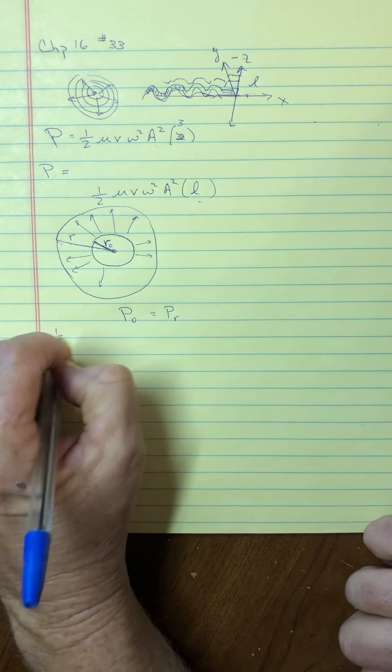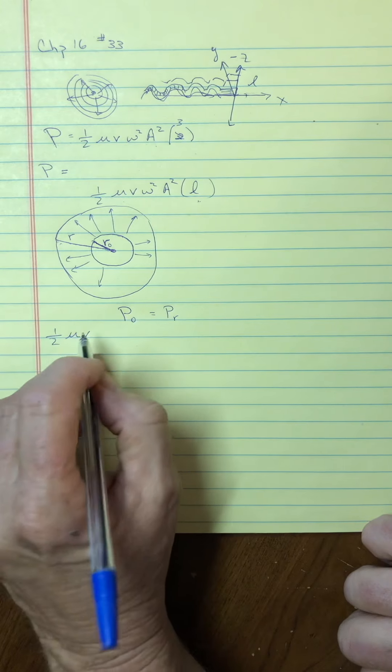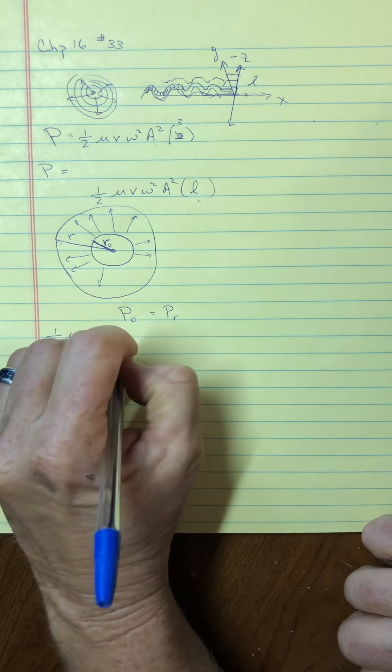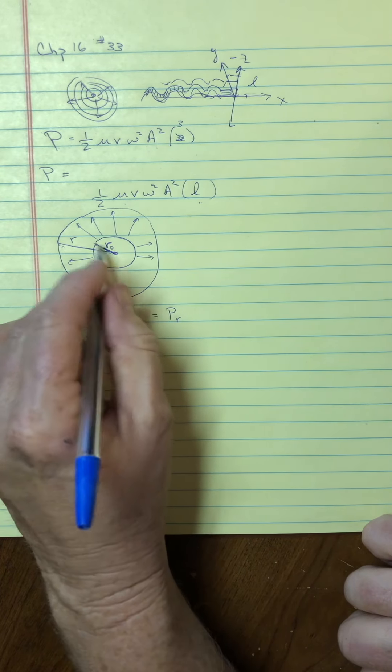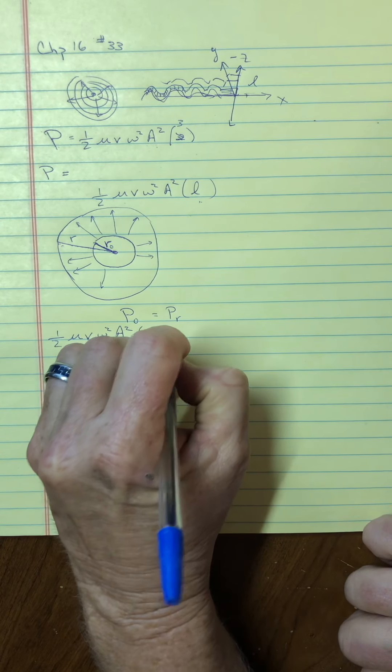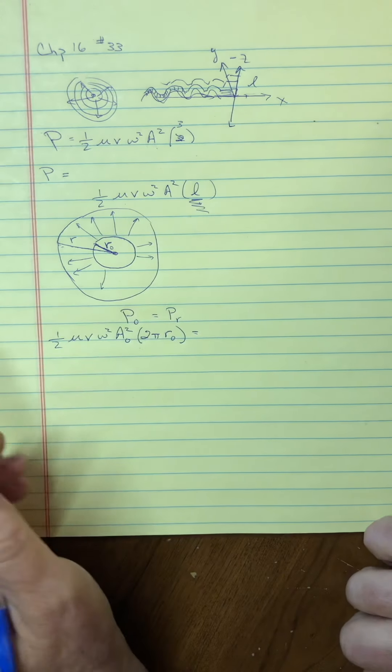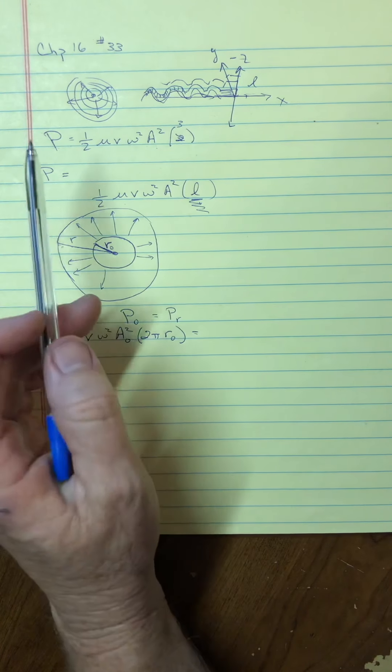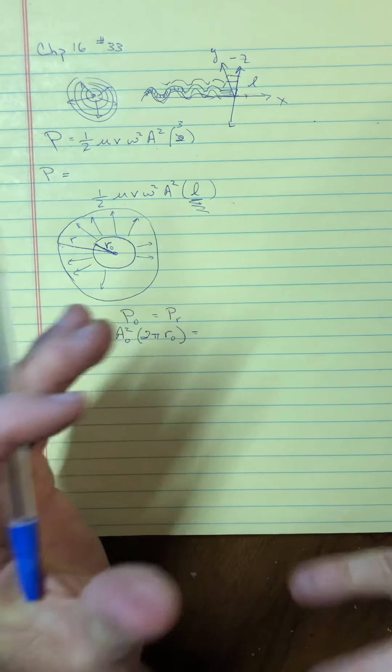Maybe I'd write this as 1 half mu. Now, mu is probably a bad symbol here because this has to do with a string, and we're talking about water waves now. But fortunately, the only part I'm really caring about is the amplitude squared at position R0, and then the length of it would be the circumference.